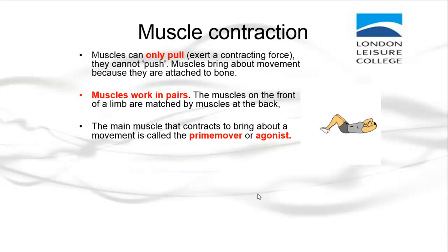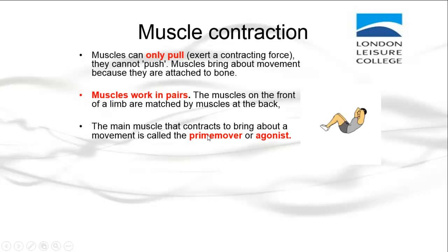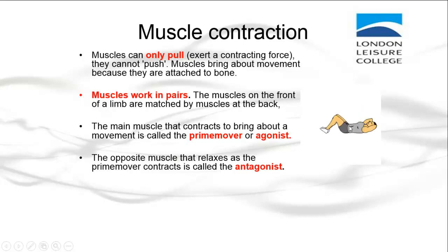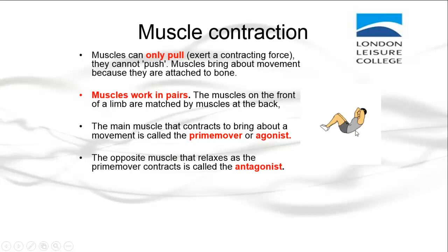In this example, this gentleman is performing a stomach crunch. The prime mover, or the agonist, is the abdominals — the rectus abdominis. The opposite muscle that relaxes as the prime mover contracts is called the antagonist. So while the prime mover is the rectus abdominis, the antagonist — the muscle that has to relax or stretch to allow movement — is the erector spinae, or the lower back.